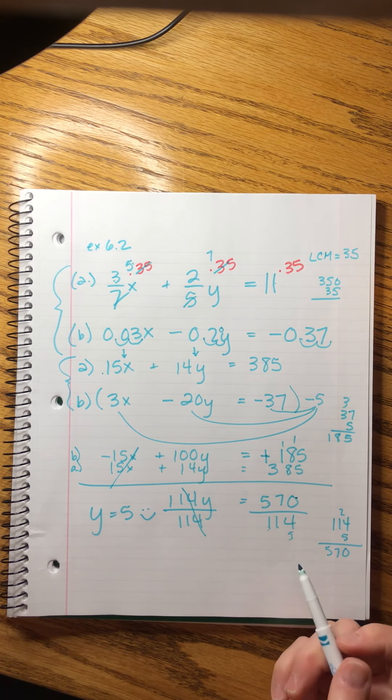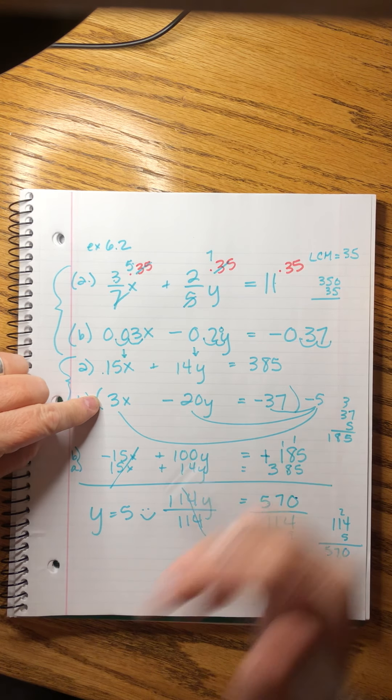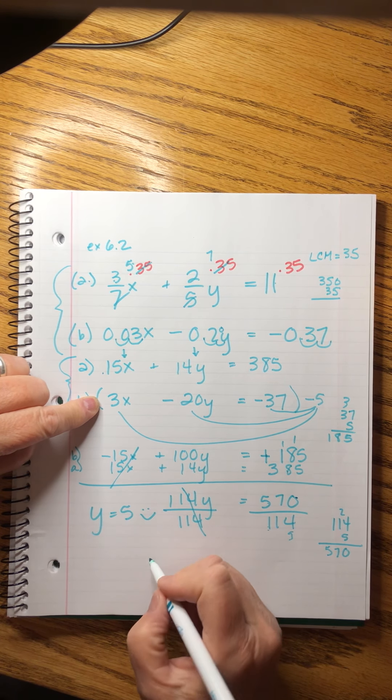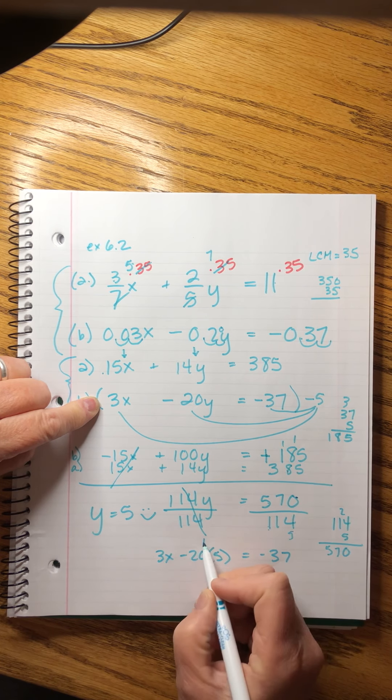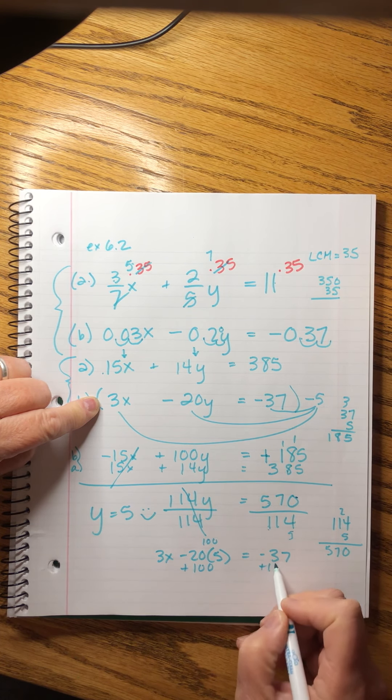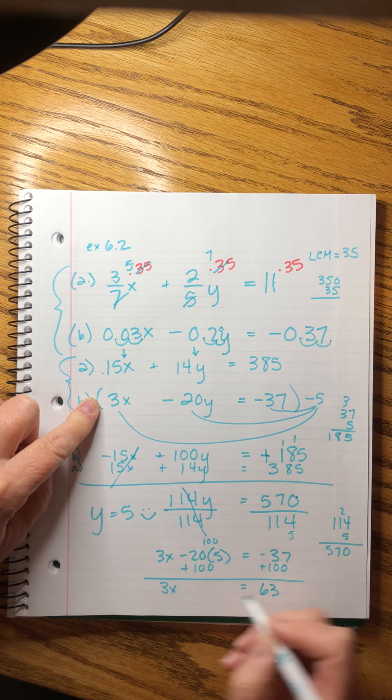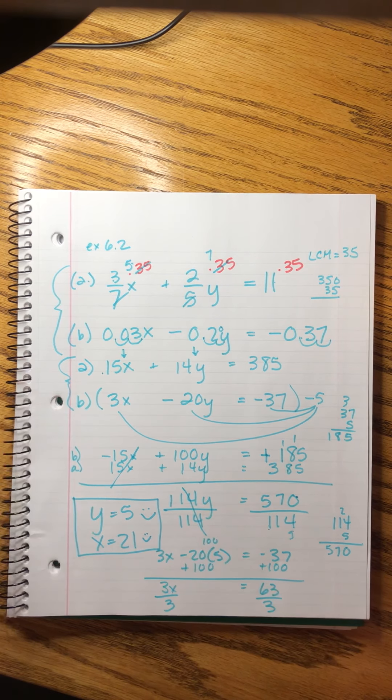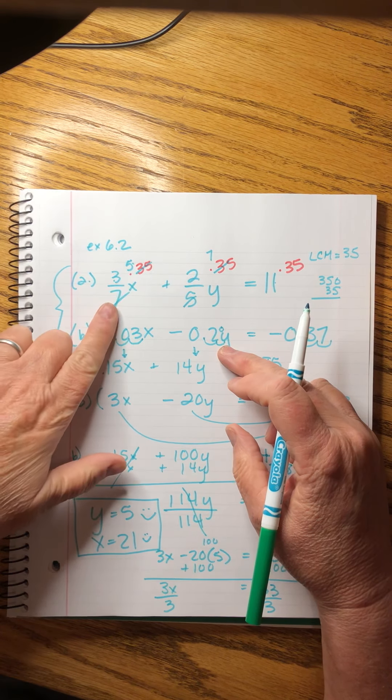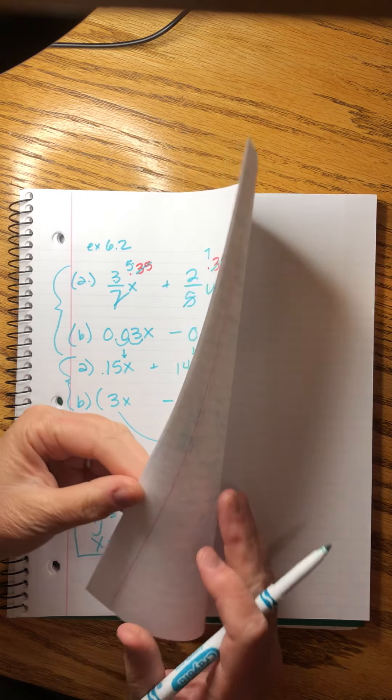However, we're not done because we still have to solve for x. Let's try this one in this form. We can choose any form of these we want because they're all the same. So, 3x minus 20 times 5 equals minus 37. This is 100. So, I'm going to add 100 to both sides. 3x equals, let's see, what would that be? 63, right? Divide by 3. And we get x equals 21. And those are the correct answers. Yay. So, the trick in this one was cleaning up our fractions and cleaning up our decimals and then working a fairly straightforward substitution problem. So easy, right? Yikes. We have jumped into the deep end of the pool for sure.